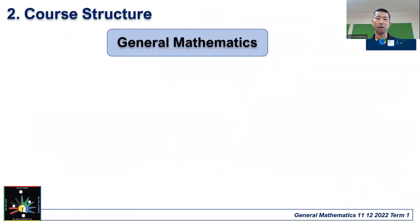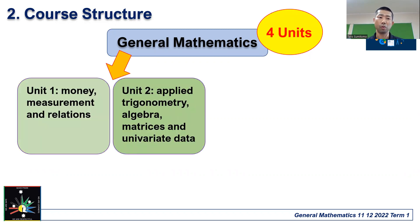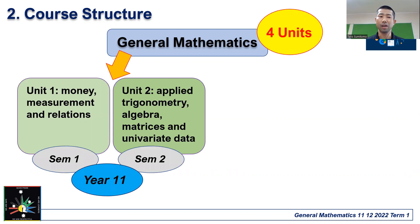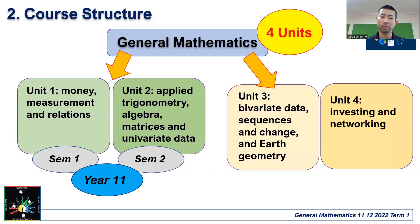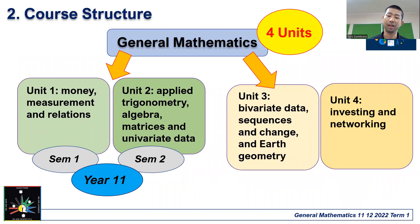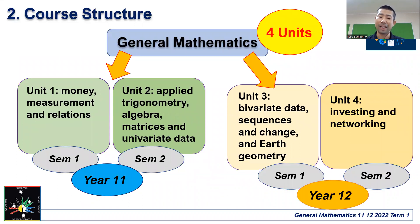Let's talk about the course structure. General Mathematics has four units. Unit one is money, measurement and relations. Unit two is applied trigonometry, algebra, matrices and univariant data. You'll be doing units one and two in semester one and semester two of year 11. Units three and four — bivariant data, sequences and change, earth geometry, investing and networking — are covered in year 12, semester one and two. So you'll be doing two units each year level.